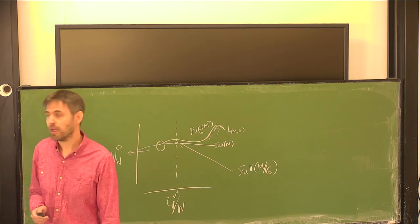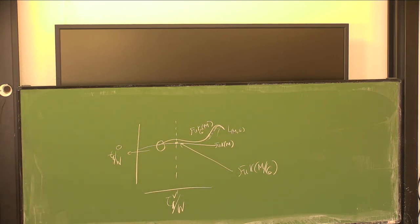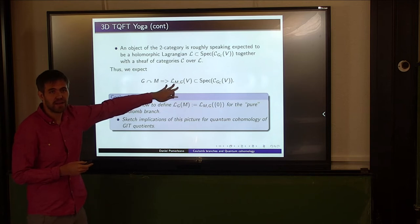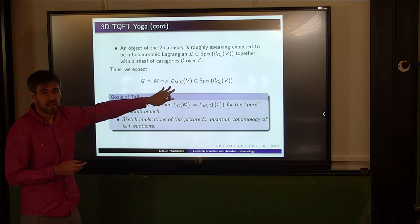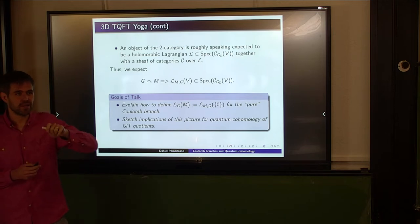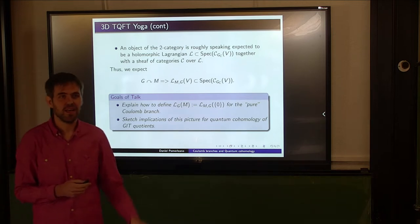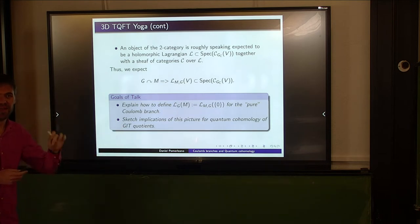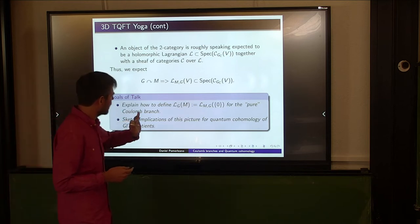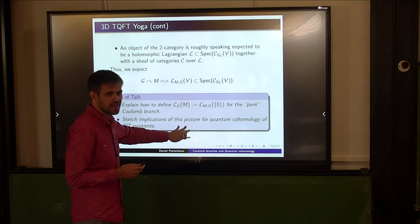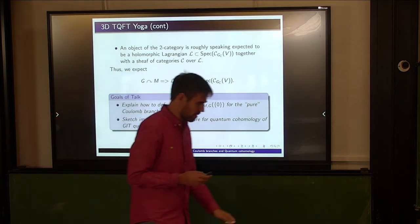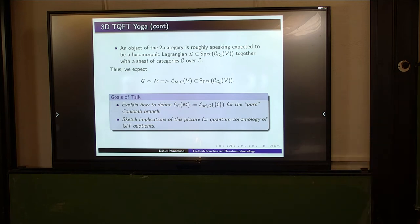V is a complex representation of G. For any complex representation, this is supposed to be the Coulomb branch with matter — you started with G acting on M, and V is an arbitrary representation, giving the symplectic manifold M cross V. I'm setting V to zero: I'm only going to consider the pure Coulomb branch case, where M is compact.